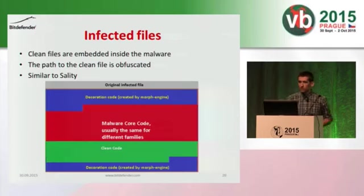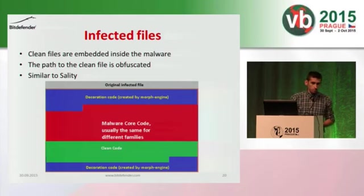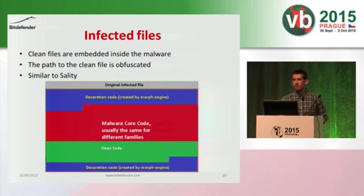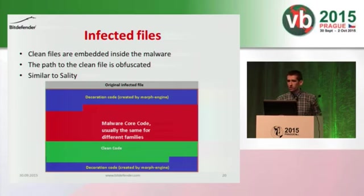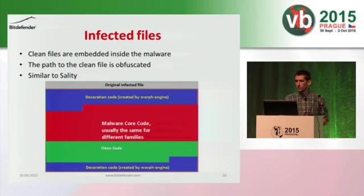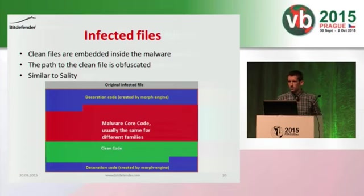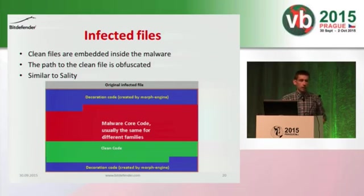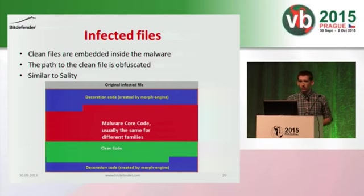This is how our clean file looks inside the malware body — the green area. We have blue areas which are some kind of decoration code, obfuscated and trying to defeat most common analysis techniques. The core engine of the malware — the red area — is in the middle, side-by-side with the clean file. All of this is packed with two different algorithms, not revealing anything in the end — you're essentially looking at a new packed file that might be doing anything.